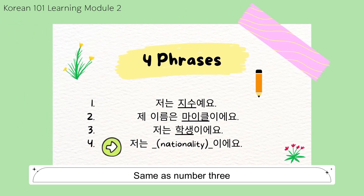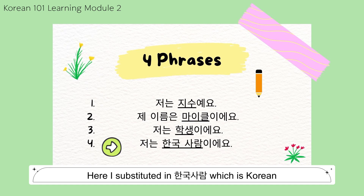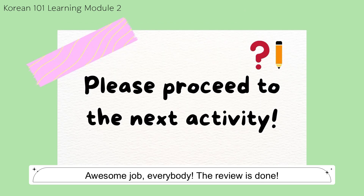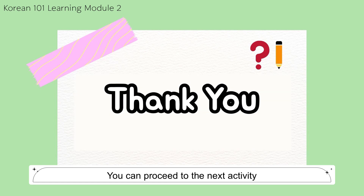Our last sentence is to introduce our nationality. Same as number 3, we are going to put the nationality vocabulary in between 저는 and 이에요. Here I substituted 한국 사람, which means Korean, so the whole sentence reads 저는 한국 사람이에요. Awesome job, everybody! The review is done. You can proceed to the next activity. Thank you.